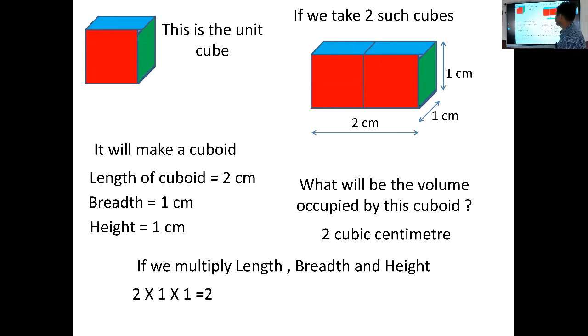So if I multiply length, that is 2 centimeters, breadth 1 centimeter, and height 1 centimeter, we are getting 2 multiplied by 1 multiplied by 1, which equals 2. This 2 is nothing but the volume of cuboid: 2 unit cubed, or we can say 2 cubic centimeters or 2 cubic units.